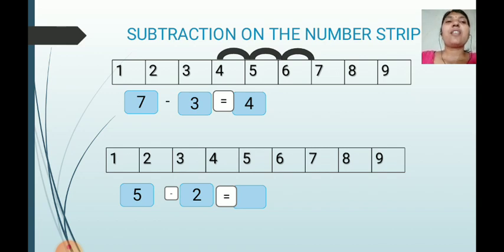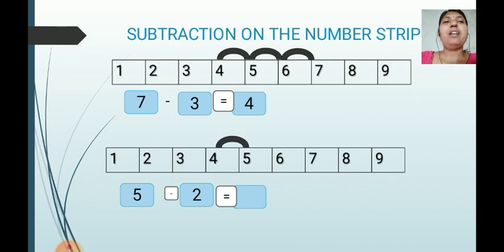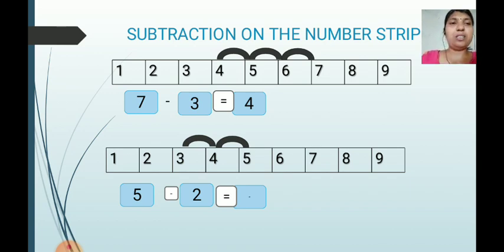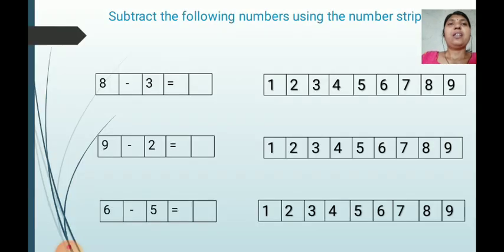Now here is one extra example: 5 minus 2. Put your pencil on number 5 and jump 2 steps backward: 1 and 2. Where do you reach? You reach number 3. So the answer is 3. Write down 3 in the box. We read it as: 5 minus 2 equals 3.